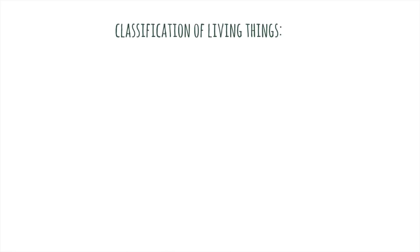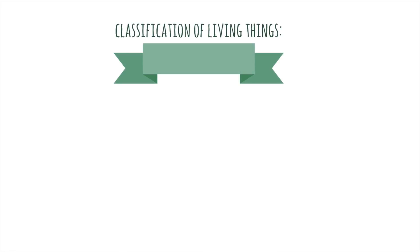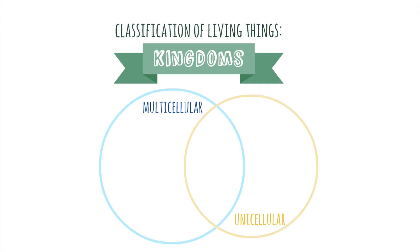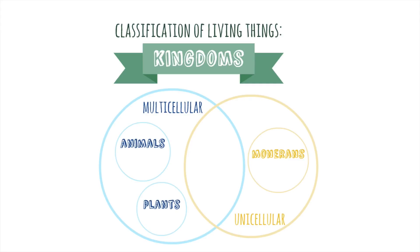As you can imagine, there are many different types of living things, and just to make it easier to get to know them, we organize them into big groups called kingdoms. Organisms can be unicellular if they only have one cell, or multicellular if they are formed by more than one cell. The monorans kingdom is formed by unicellular organisms. Plants and animal kingdoms have multicellular organisms, and organisms in fungi and protist kingdoms can be both unicellular or multicellular.